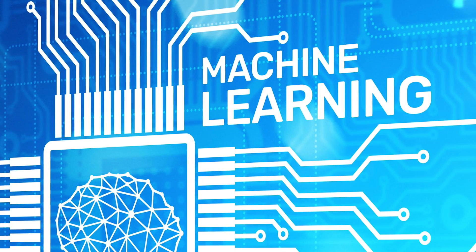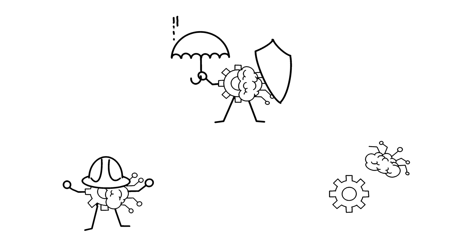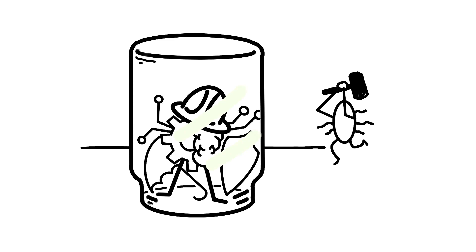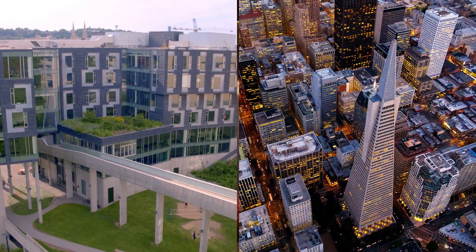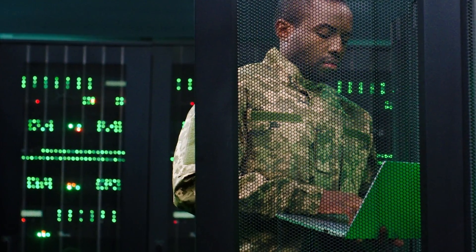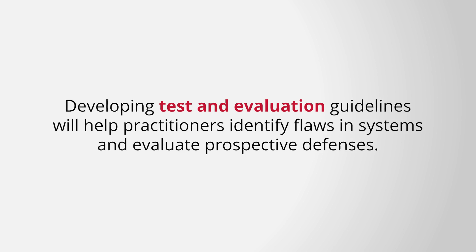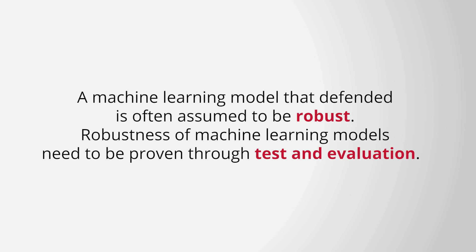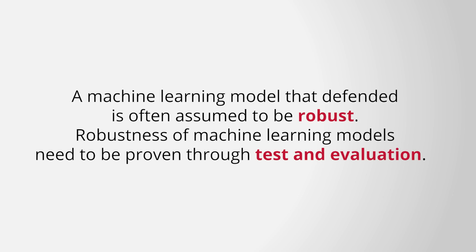Now that we have looked at how machine learning systems are susceptible to producing unexpected results, we need to understand what methods can be used to defend a machine learning system from an adversary. One would hope there are dedicated methods to protect ML systems from each do-learn-reveal class of attack. Unfortunately, defending a machine learning system from an adversary is a difficult problem and an area of active ongoing research with few proven generalizable solutions. While generalized and proven defenses are rare, the community is producing specific defenses for specific attacks. Developing test and evaluation guidelines will help practitioners identify flaws in systems and evaluate prospective defenses. A model that is defended is often assumed to be robust, but robustness needs to be proven through test and evaluation.